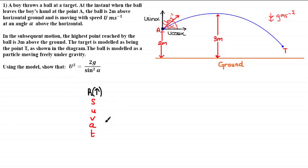Now that we're resolving vertically, we need to build up a SUVAT equation to help prove this result. In order to find values for these quantities, we need to choose a specific point along the trajectory to model. The point I'm going to choose is here — I'll call this point P — which is the highest point reached by the ball, three meters above the ground. If you're not told which point to choose, I strongly suggest you choose a point where you think you'll be able to find the most information for your SUVAT equations.